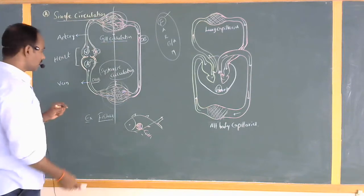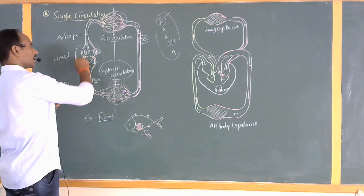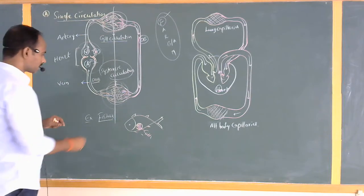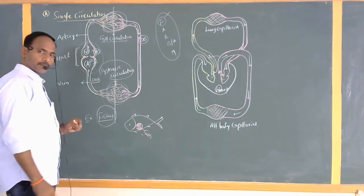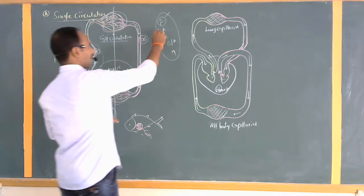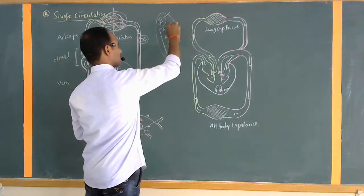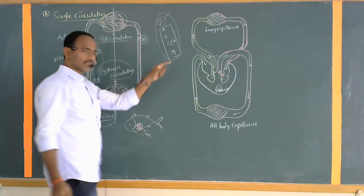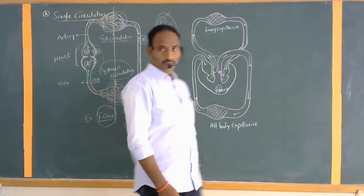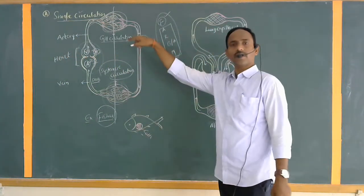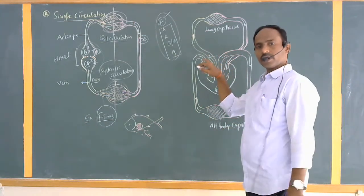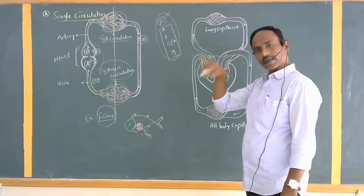In single circulation, there is one atrium and one ventricle — two chambers of the heart. The best example is fishes. The remaining animals — amphibians, reptiles, birds, and mammals — possess double circulation, also known as double circuit circulation.